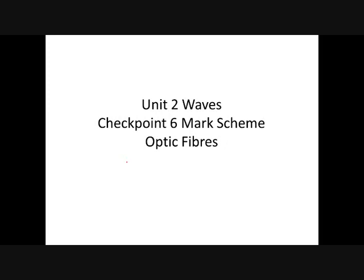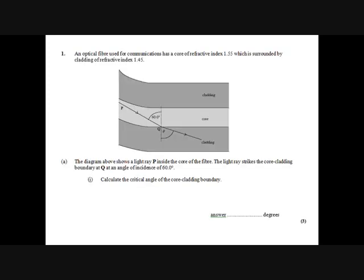This is my scheme for checkpoint six on optic fibers. Here's our first question. We've got our classic optic fiber setup here with the core. We've got a refractive index of 1.55 in the core, a refractive index of 1.45 in the cladding. Remember this has always got to be lower. Sometimes they like to ask you which one should be which. If you've got these two materials, the cladding has to be lower refractive index, otherwise you won't get total internal reflection.